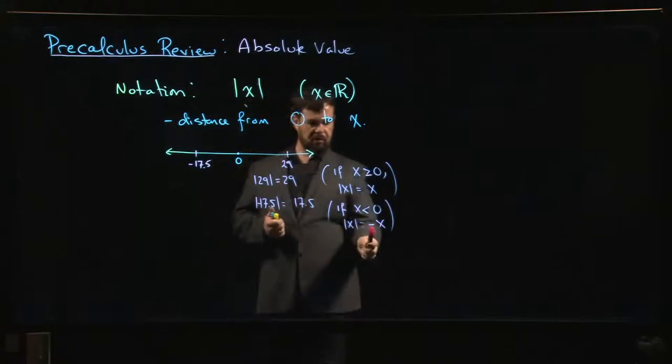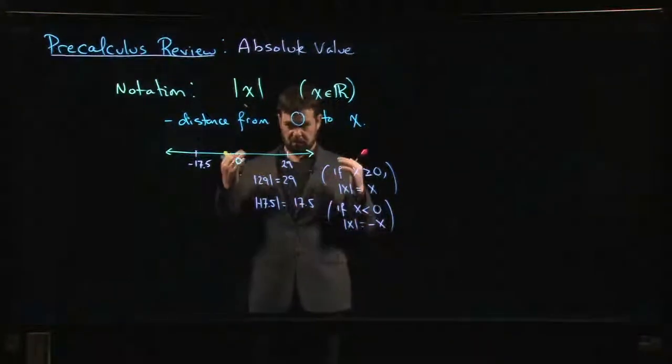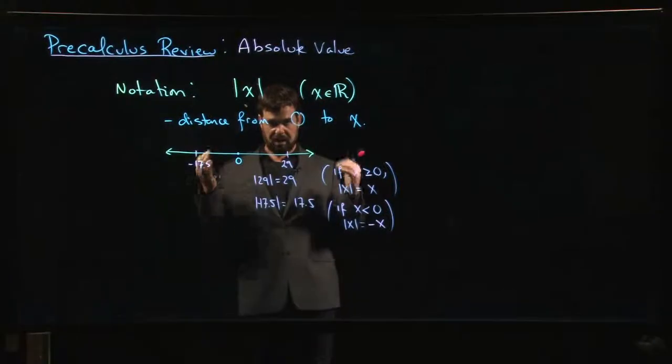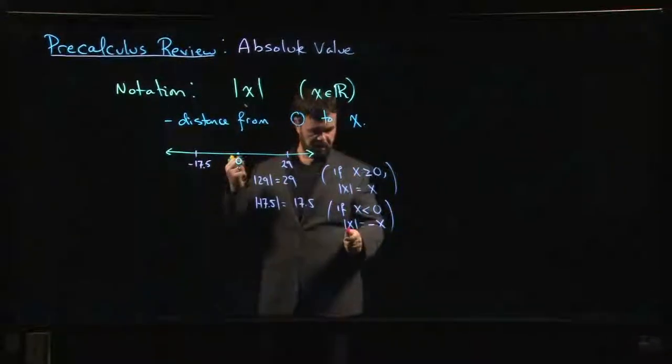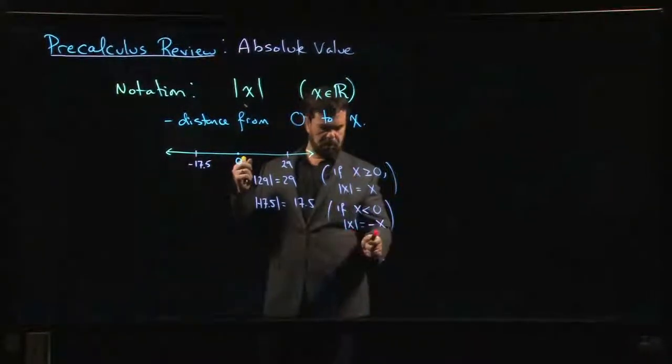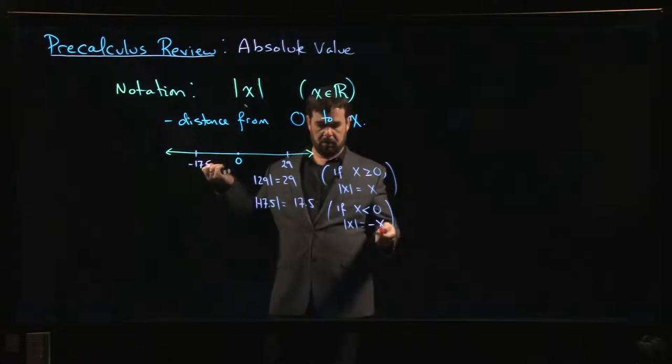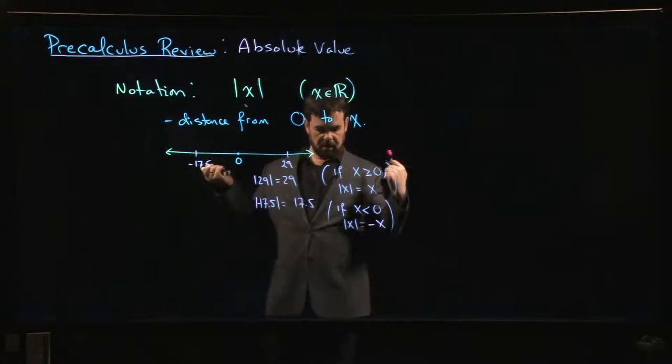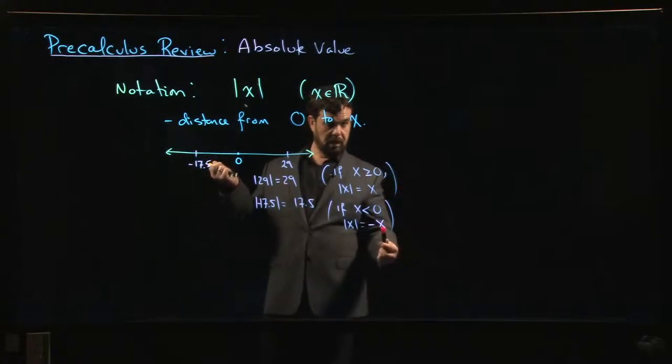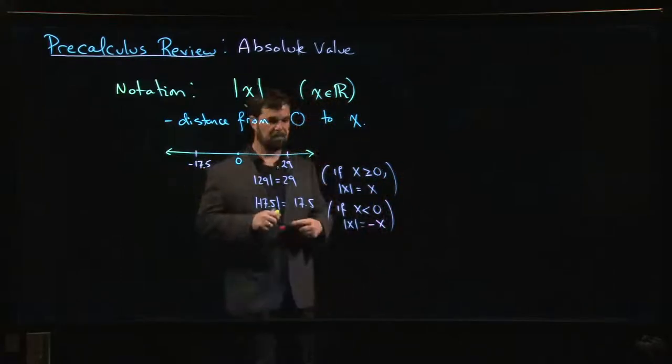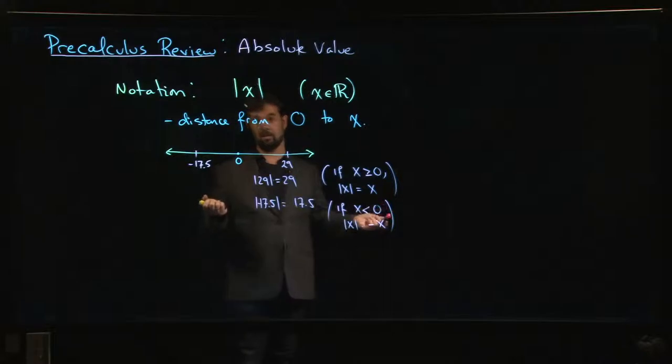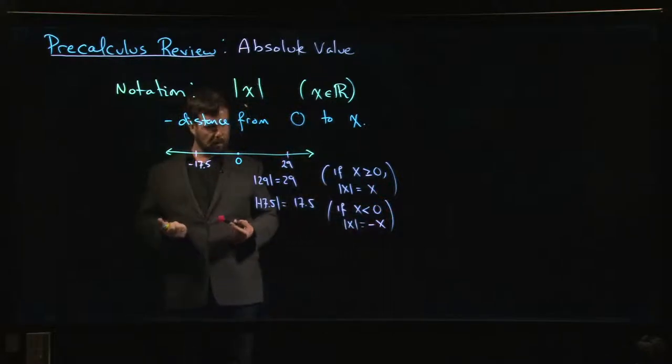Some people get thrown off by this because they see that minus sign, and every time you see a minus sign, you think negative. So like, wait a sec, absolute value is supposed to be positive, but over here, this looks like a negative number. But it's not. Because x here is just some variable, or it could be any real number. And real numbers can be negative. So if this happens to be a negative real number, and you put a minus sign out front, it's going to become positive. So even though there's a minus sign there, the number might still be positive if the number you started with is negative.